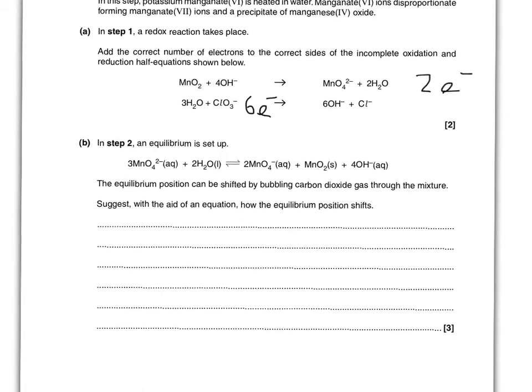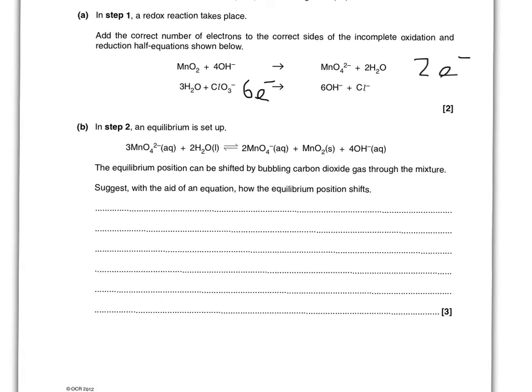Okay, part B, really really tough A-star question. In step 2 an equilibrium is set up: 3MnO4^2- plus 2H2O makes 2MnO4^- plus MnO2 and 4OH minuses. The equilibrium position can be shifted by bubbling carbon dioxide gas through the mixture. Suggest with the aid of an equation how the equilibrium position shifts.